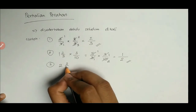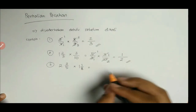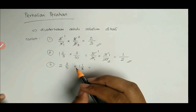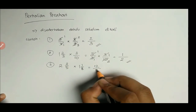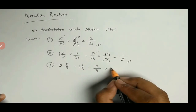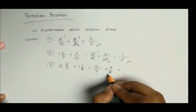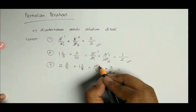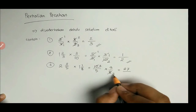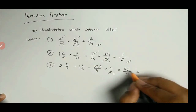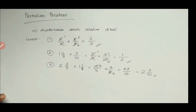Contoh berikutnya: 2 dan 2/5 dikali 1 dan 1/8. Ubah menjadi pecahan biasa: 2 dan 2/5 = (5×2 + 2)/5 = 12/5. Dikali 1 dan 1/8 = (8×1 + 1)/8 = 9/8. Sederhanakan: 12 dan 8 sama-sama dibagi 4, hasilnya 3/2. Sehingga 3 × 9 = 27, dan 5 × 2 = 10. Hasilnya 27/10, atau dalam pecahan campuran: 2 dan 7/10.